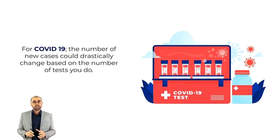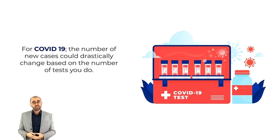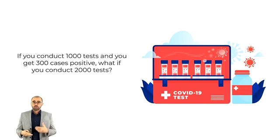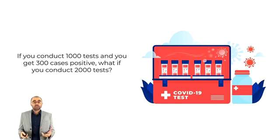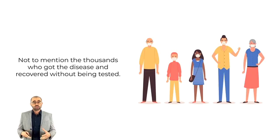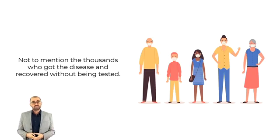For COVID-19, the number of new cases could drastically change based on the number of tests that you do every day. If you conduct 1,000 tests and get 300 positive cases, what will happen if you conduct 2,000 tests? Not to mention the thousands who got the disease and recovered without even being tested.